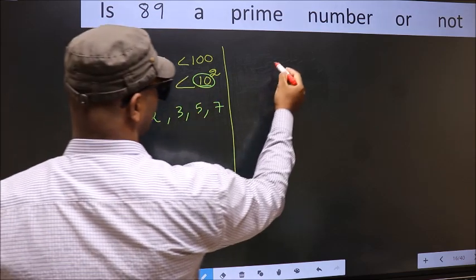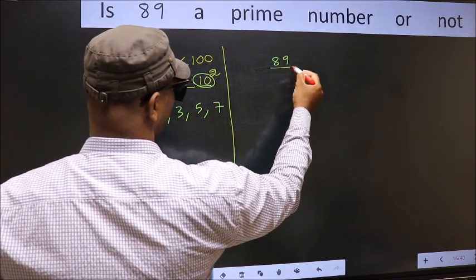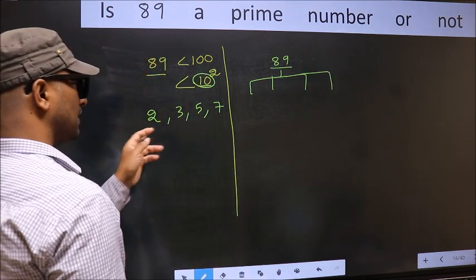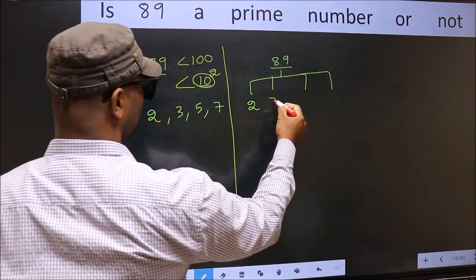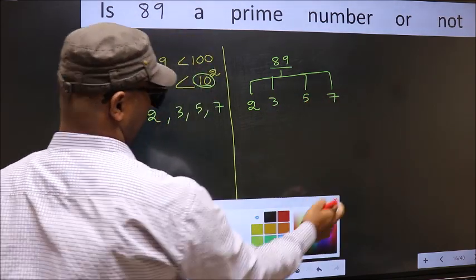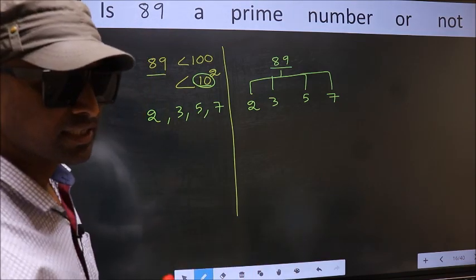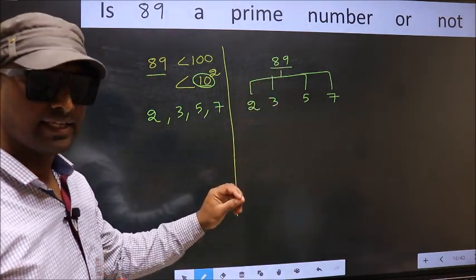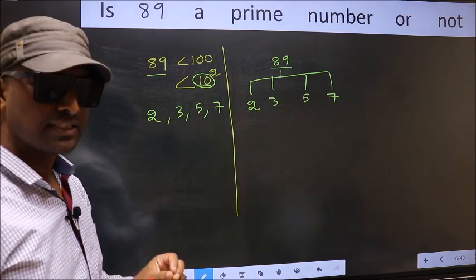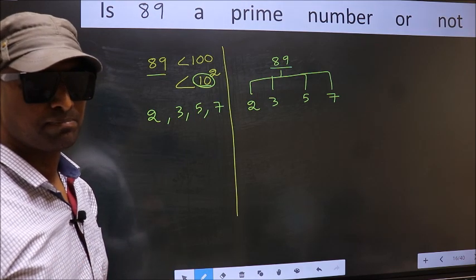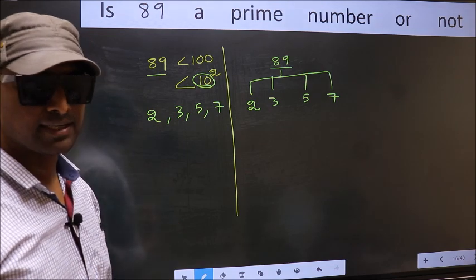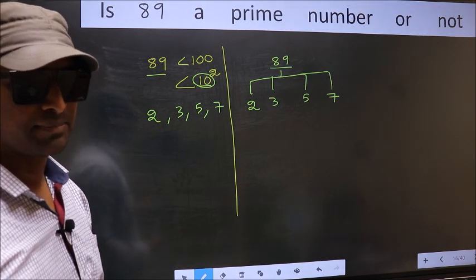Now for the given number we should check divisibility by these numbers: 2, 3, 5 and 7. If the number 89 is divisible by any one of these numbers, we say it is not a prime number. Otherwise it is a prime. Did you understand the method? Let us check with the divisibility.